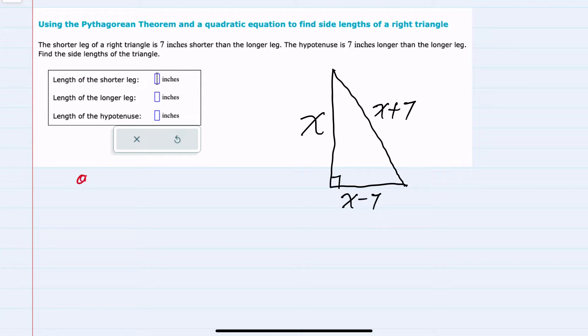From the Pythagorean Theorem we know that for right triangles a squared plus b squared equals c squared where a and b are the lengths of the legs and c is the hypotenuse.